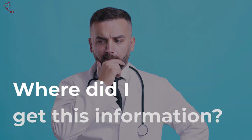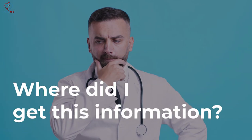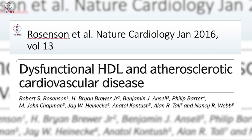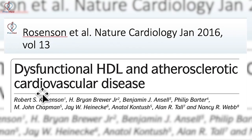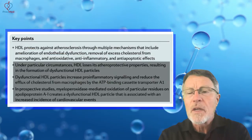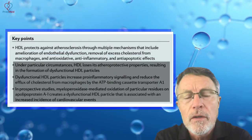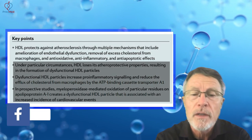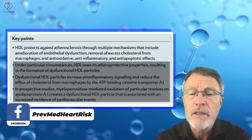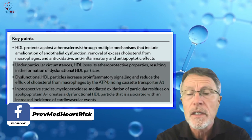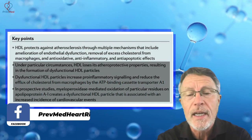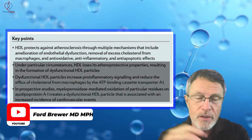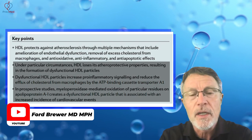One of the better articles on this topic is Rosenson and Associates in Nature Cardiology — a review article from January 2016, volume 13. Key points from that review: HDL protects against atherosclerosis through multiple mechanisms, including amelioration of endothelial dysfunction, removal of excess cholesterol from macrophages, and antioxidative, anti-inflammatory, and anti-apoptotic effects. Apoptosis is cell death — it's an inflammatory process.